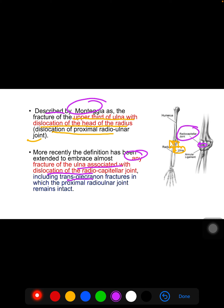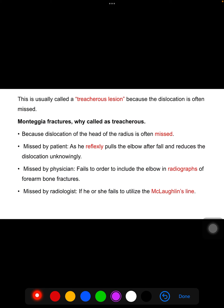This extended definition includes trans-olecranon fractures in which the proximal radio-ulnar joint remains intact, as well as cases where there is dislocation of the distal radio-ulnar joint. It is usually termed a 'treacherous lesion' because it is often missed.